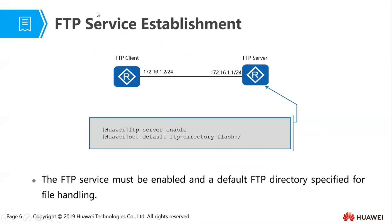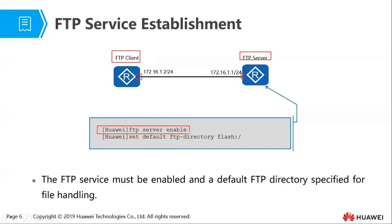To establish FTP between the client and server — and Huawei routers can act as both — the very first requirement is reachability: your client must be able to reach the server, meaning it can ping the server. To enable your Huawei router to act as a server, in system view you enter the command 'FTP server enable'.